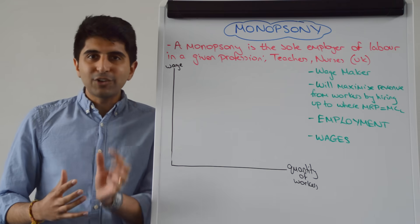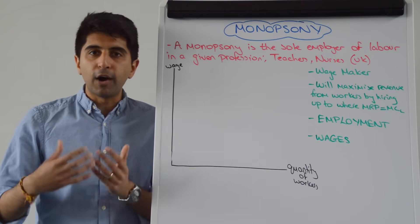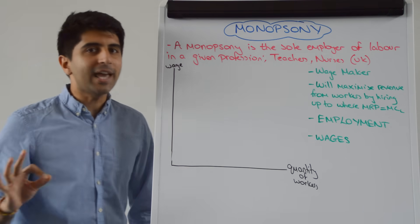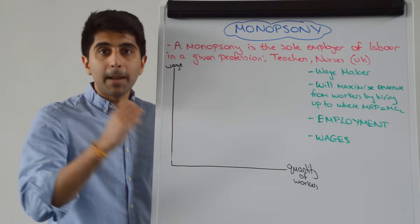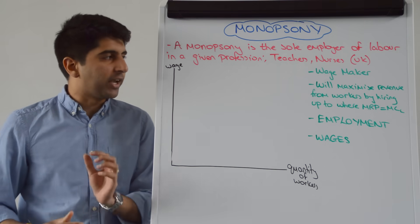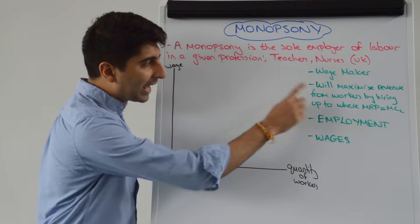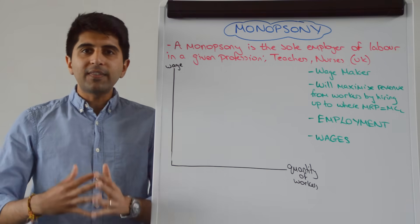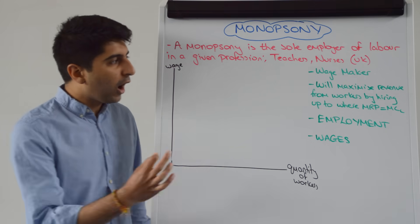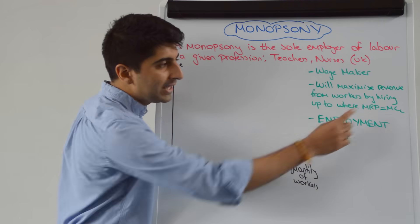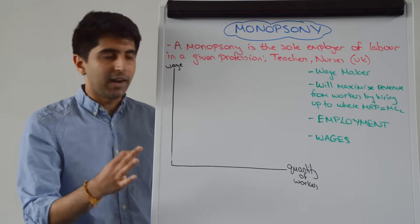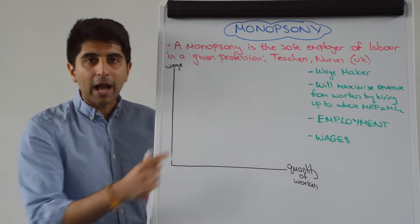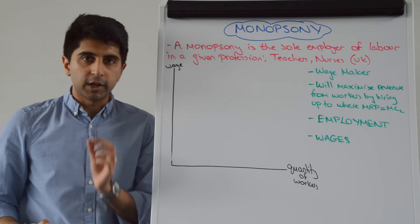Because monopsonies have significant buying power over workers, we can say they are not wage takers anymore — they are wage makers. They can set wages, and they will maximise revenue by hiring workers up to where MRP equals the marginal cost of labour. These two conditions are significant as we look at how monopsonies work on a diagram.